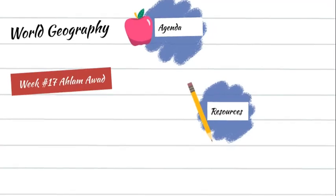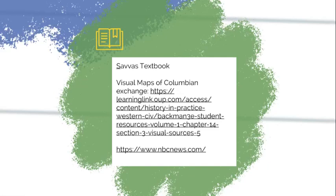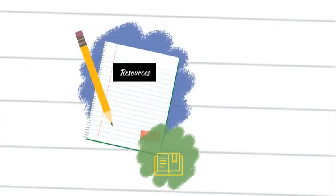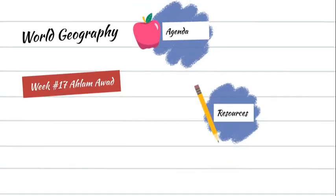That's basically it for this week. If you'd like to utilize some resources, you always have your SEVAS textbook online. The visual maps of the Columbian Exchange document is also linked here, and the NBC News website is available if you want to use that for your five W's. If you have any questions, please contact me through email or reach out in person. Thank you, and have a good rest of your week.